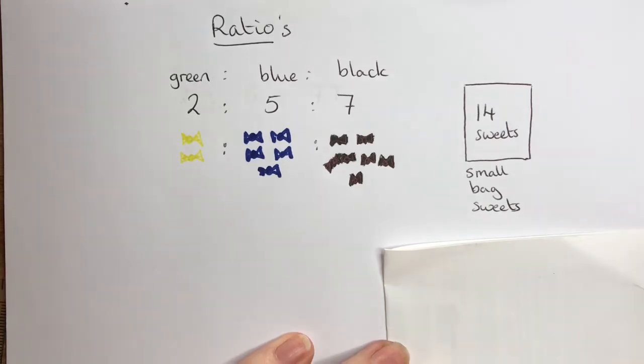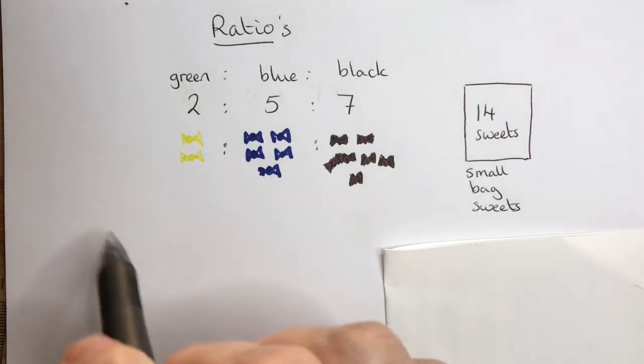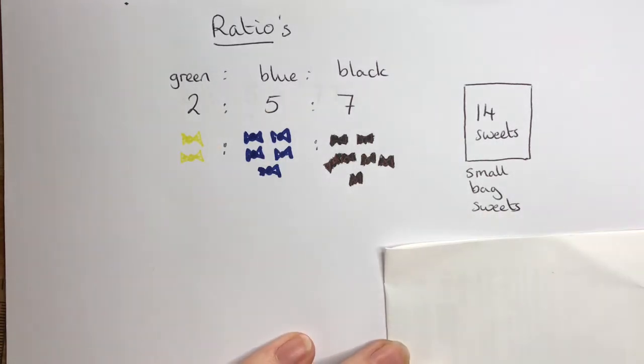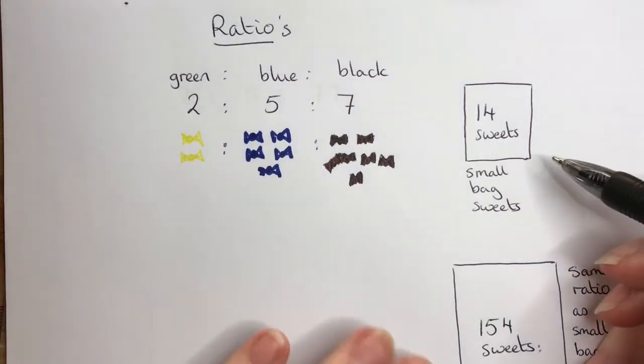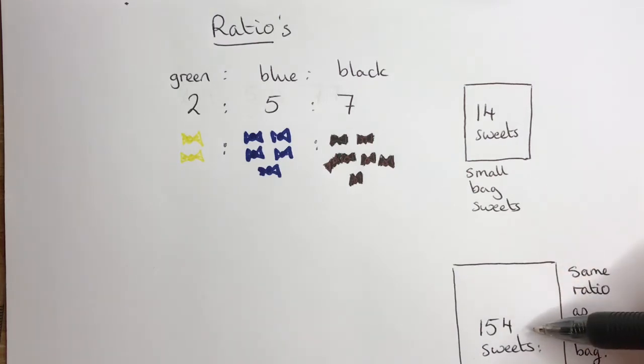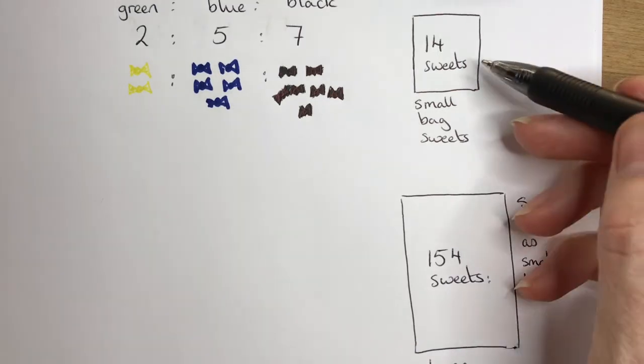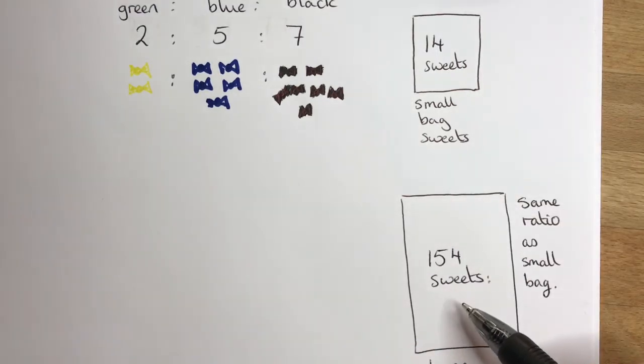The question was, what would be the ratio of sweets if it was in the same ratio but in a much bigger bag? If we had 154 sweets with the same ratio as the small bag, how many of each sort would there be?